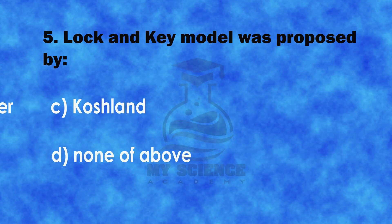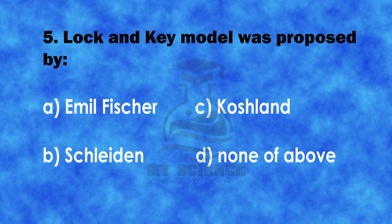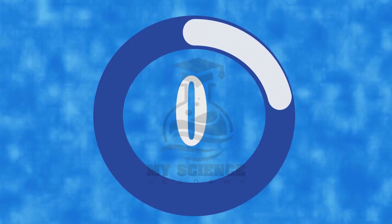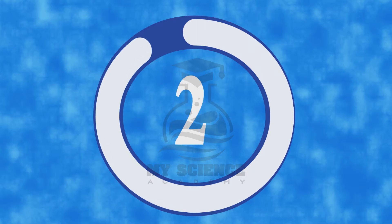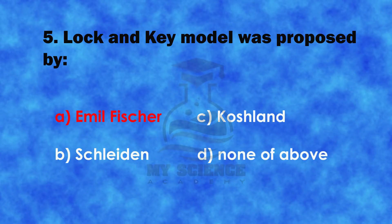Question 5: Lock and key model was proposed by: A. Emil Fischer, B. Schleiden, C. Quashland, or D. None of above. The correct answer is A. Emil Fischer.